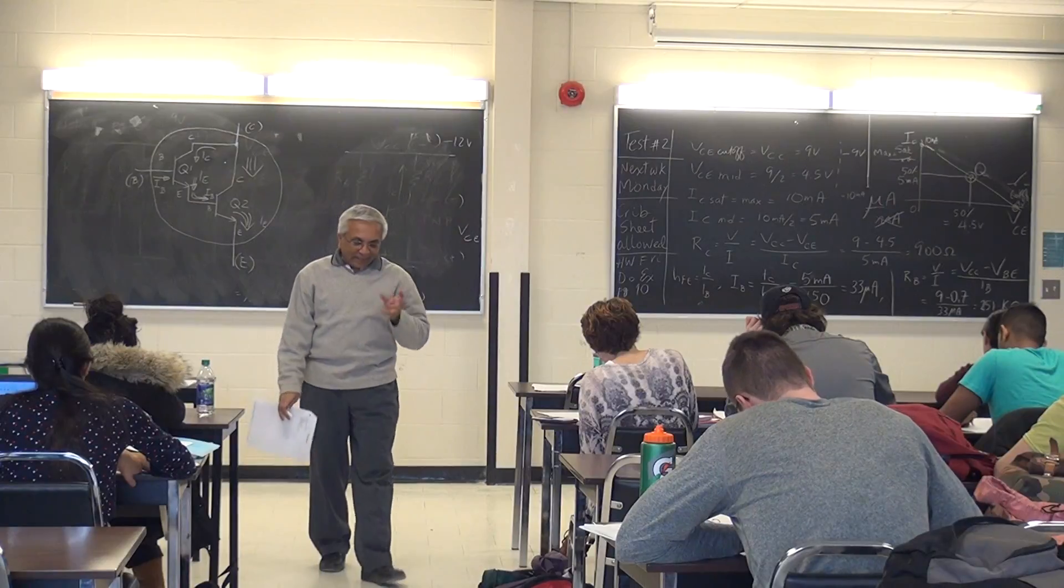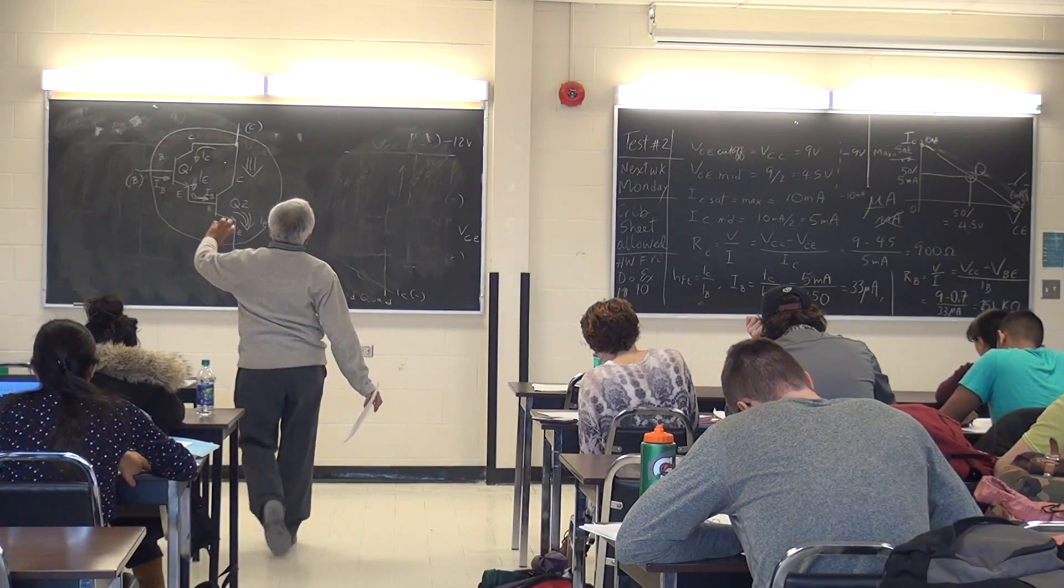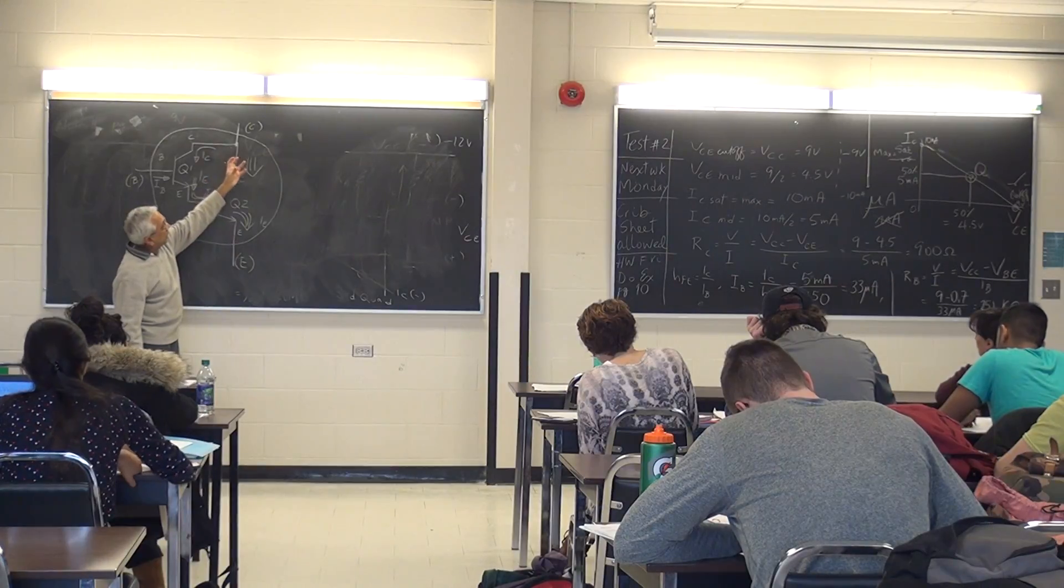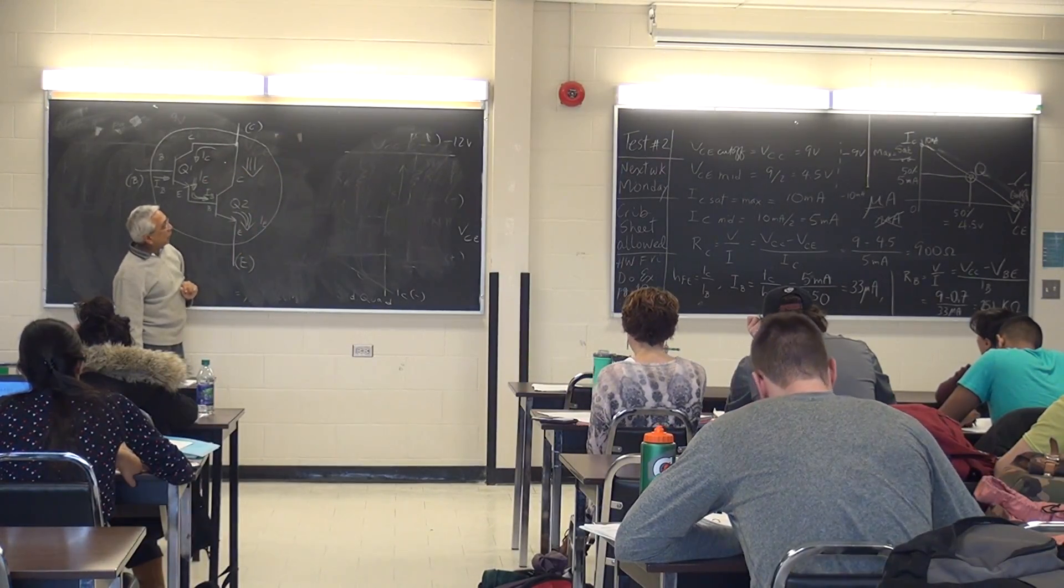So that's what the Darlington circuit does, is a little bit of IB will cause a super large IC in the circuit to flow.